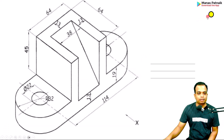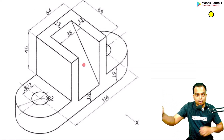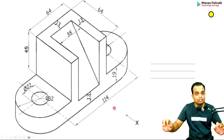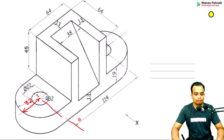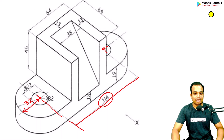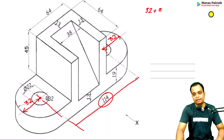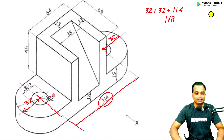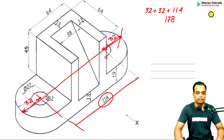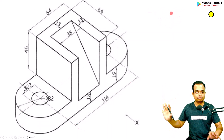Viewing the object from the front, the length from left to right: this distance is 32 (the radius of the circular profile), then from center to center is 114, then again 32 (radius of the semi-circular profile). So 32 plus 32 plus 114 equals 178. That is the total length — from the leftmost to the rightmost point, the distance is 178 mm.